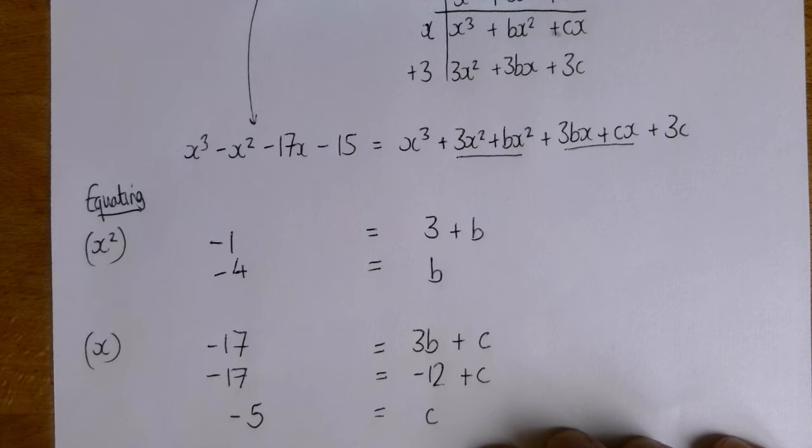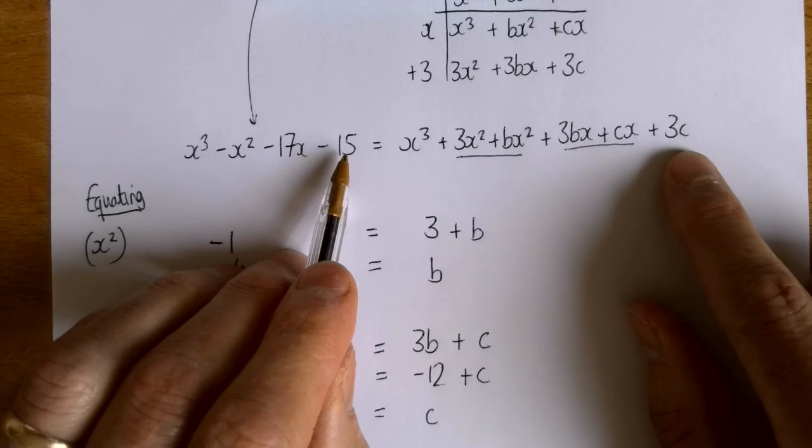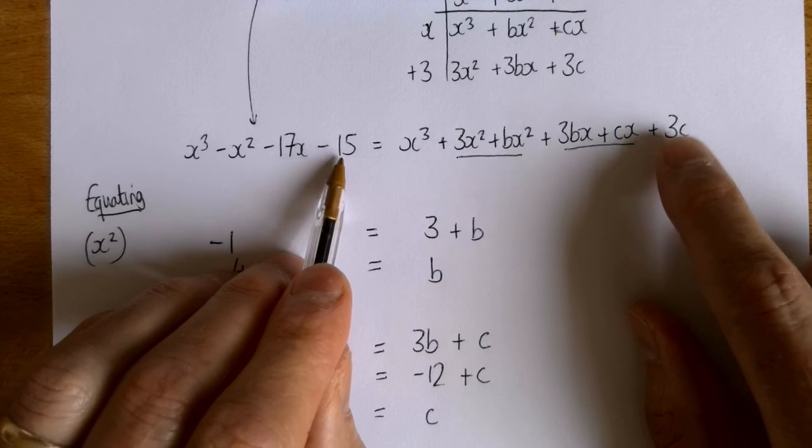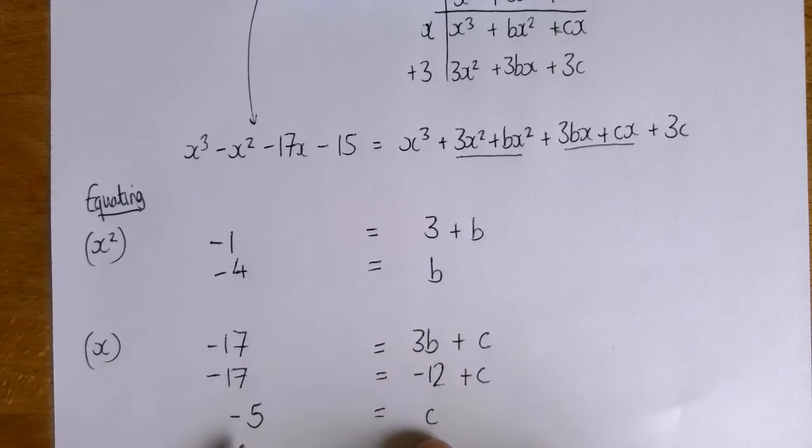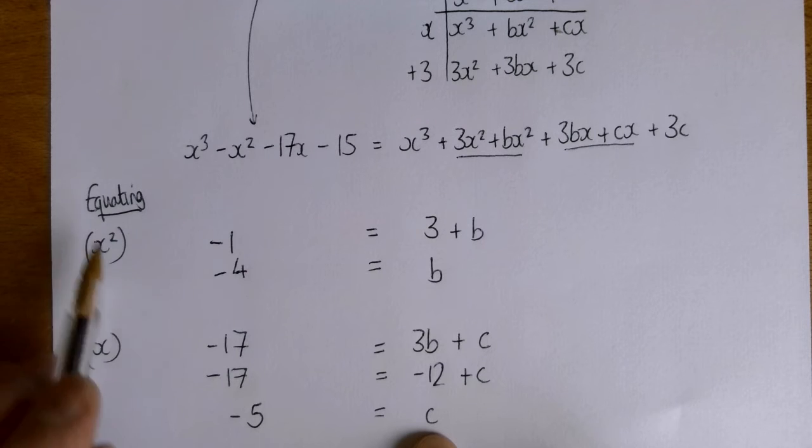Now I could have gone on to look at the constant term. Minus 15 is equal to 3c. Those two terms are the same. And that would have given me the same answer. So that would have perhaps been an easier way to work out that constant term. But I've now worked out what b and c were using equating.